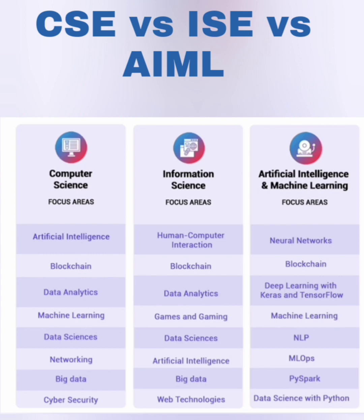Artificial intelligence is present in computer science, and it's also in information science. The same AI is a main focus area of the AIML branch as well — so that is a common subject. Blockchain is also common between all the branches, since it is an application of IT services and one of the fastest-moving areas.